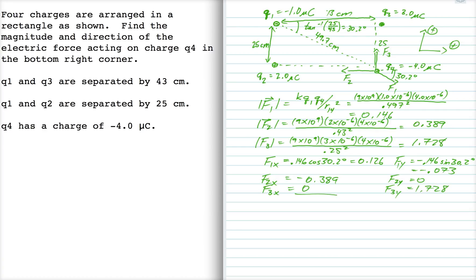Okay, so now we add up the components, and the total x component is minus 0.263. The total y component is 1.655. Now I just have to combine that into the magnitude and direction of the final vector.